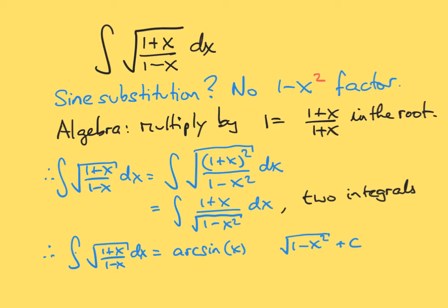But we can use algebra to try to rewrite this factor in this form. So inside the root, we're going to multiply by 1. We're going to multiply the top and the bottom by 1 plus x. So we're going to have 1 minus x times 1 plus x. And 1 minus x times 1 plus x is going to be 1 minus x squared. The cross terms, when you multiply this out, will cancel. So in that way, the denominator is going to become something suitable for a sine substitution.